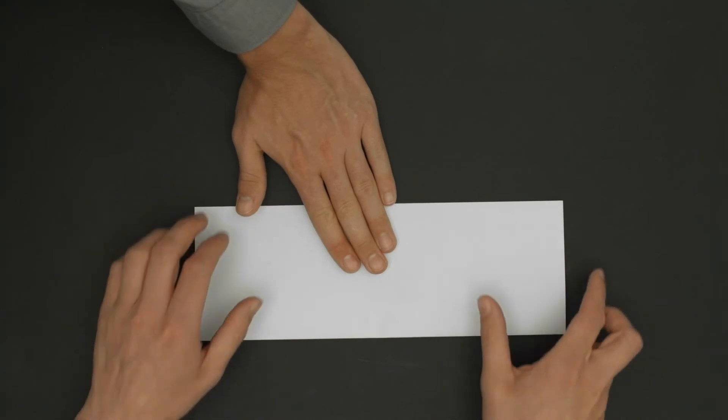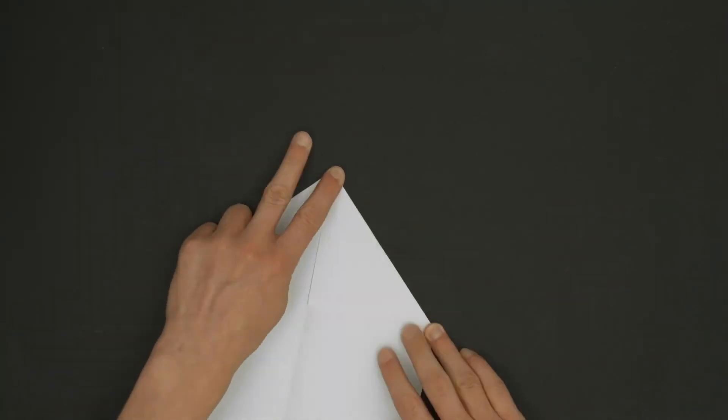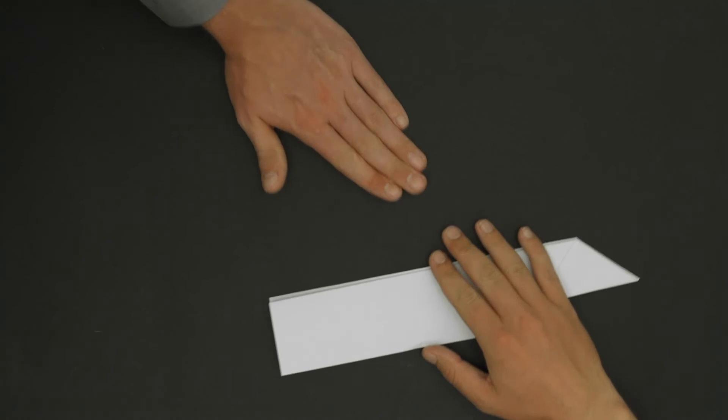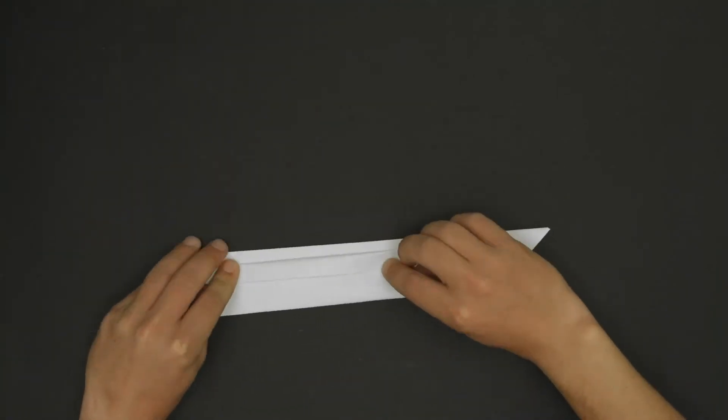Each module does a different work step. In our case, a different folding step and relays the result back to the central hub until the paper plane has been completely folded at the end.